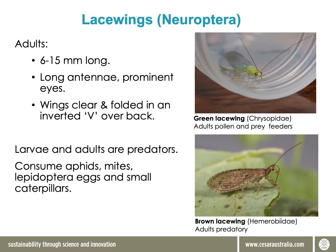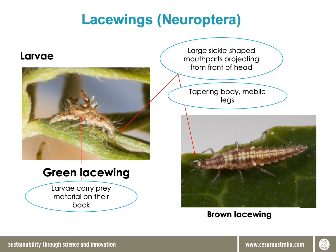Green lacewings tend to be more common up north, although they have been seen around Melbourne, while the brown lacewing tends to be more common in the southern regions of Australia. The adults are small, fragile-looking, with long antennae and beautiful lacy wings. The adult green lacewings do a bit of predation, and the brown are primarily predators, but the larvae are the most important life stage when it comes to control of plant pests.